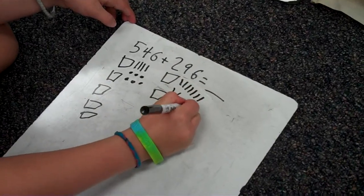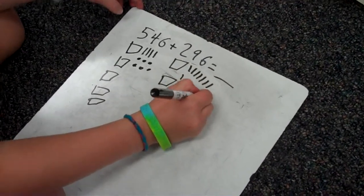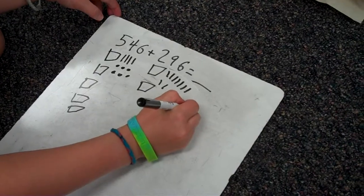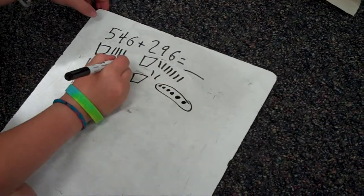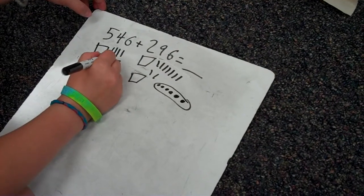So when you add, you draw base 10 blocks for both numbers? Yeah. So you take six, seven, eight, nine, ten.